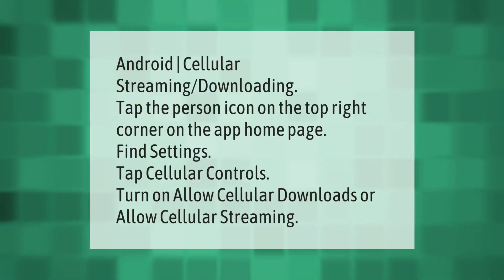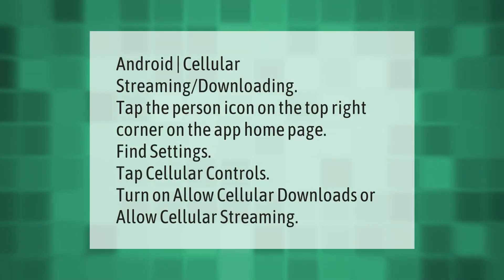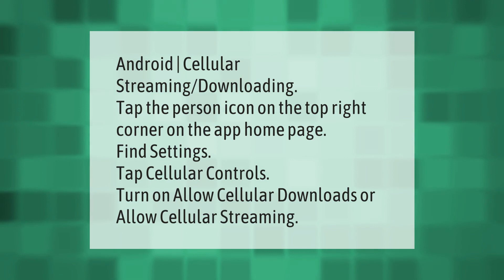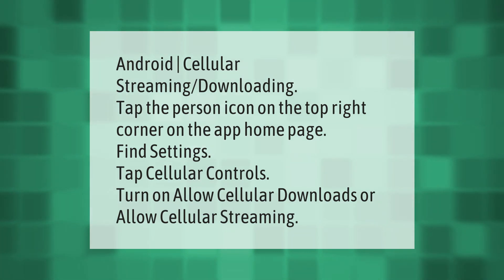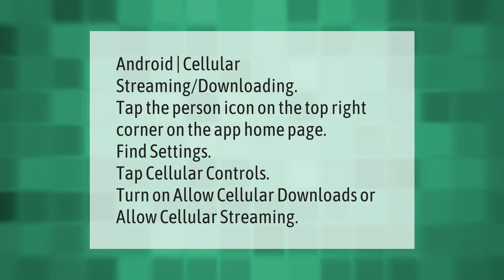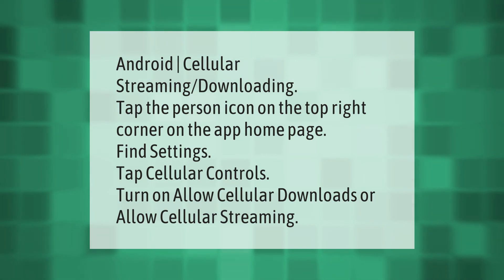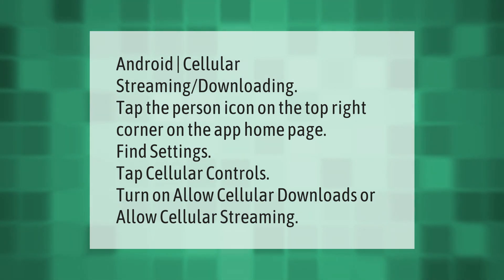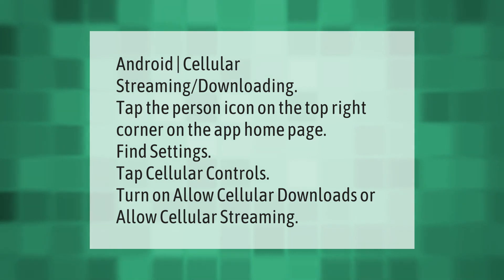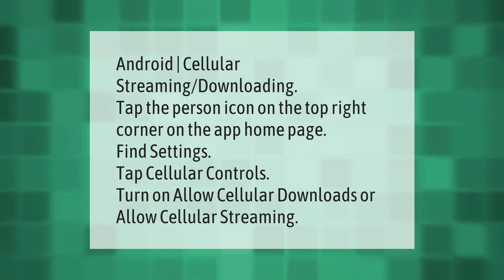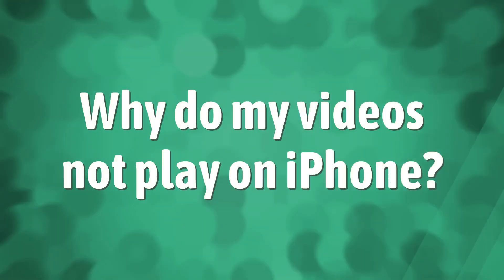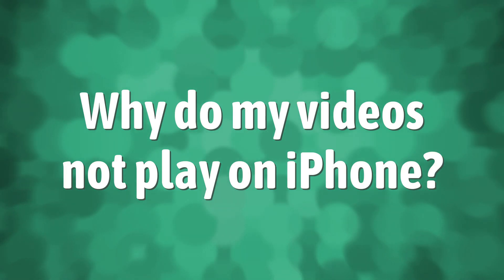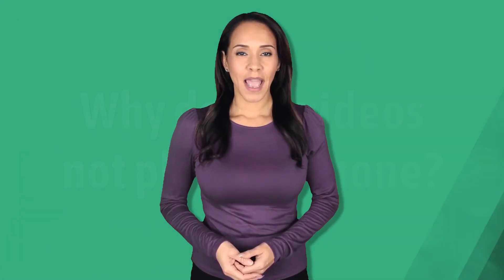On Android, for cellular streaming and downloading: tap the person icon on the top right corner on the app home page. Find Settings, tap Cellular Controls, then turn on Allow Cellular Downloads or Allow Cellular Streaming.